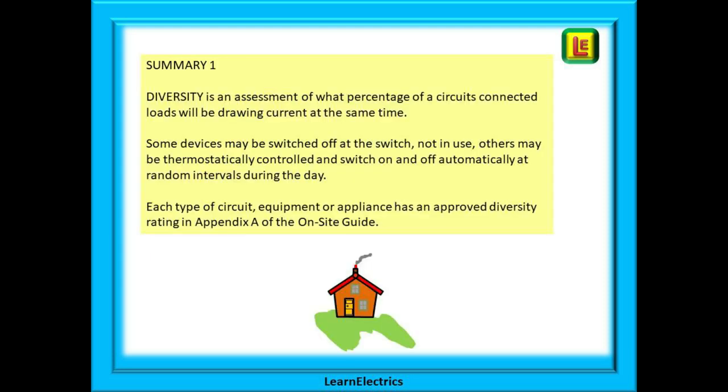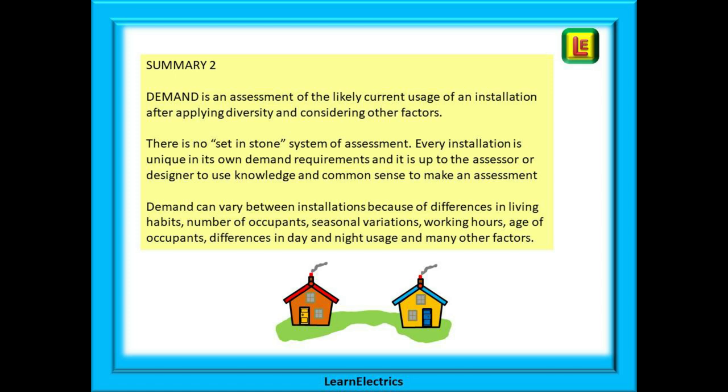In summary, diversity is an assessment of what percentage of a circuit's connected loads will be drawing current at the same time. Some devices may be switched off or not in use; others may be thermostatically controlled and switch on and off automatically at random intervals during the day. Each type of circuit, equipment, or appliance has an approved diversity rating in Appendix A of the on-site guide. Demand is an assessment of the likely current usage of an installation. There is no set in stone system of assessment. Every installation is unique in its own demand requirements, and it is up to the assessor or designer to use knowledge and common sense to make an assessment.